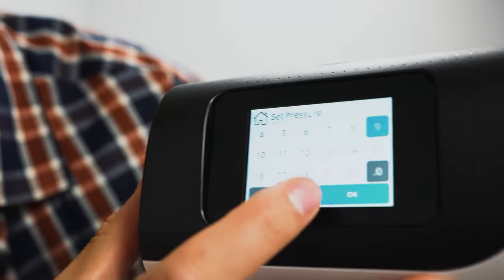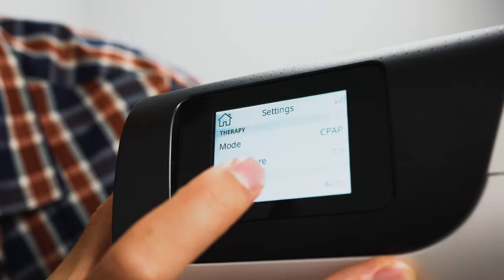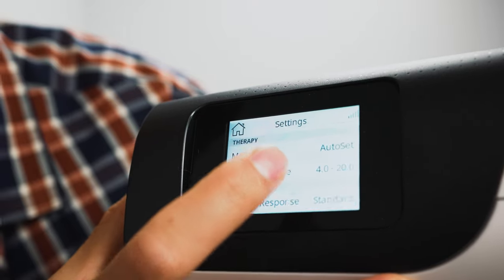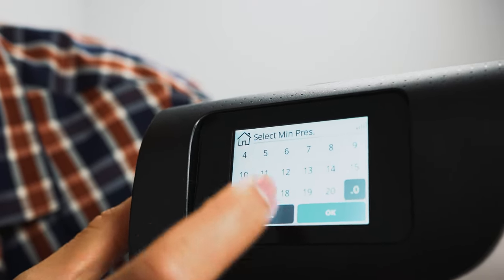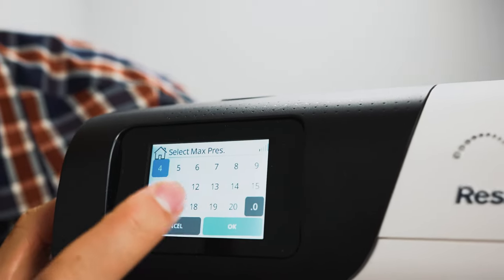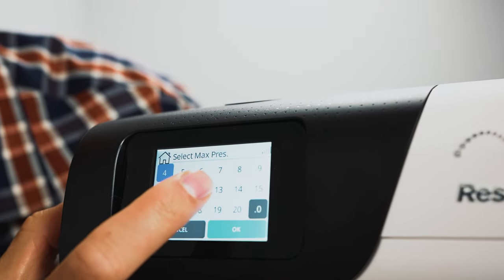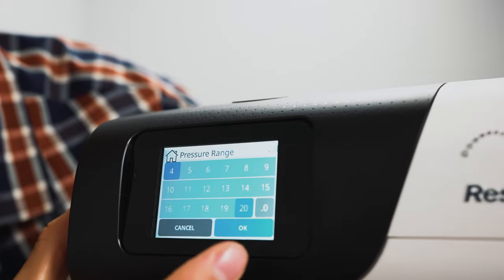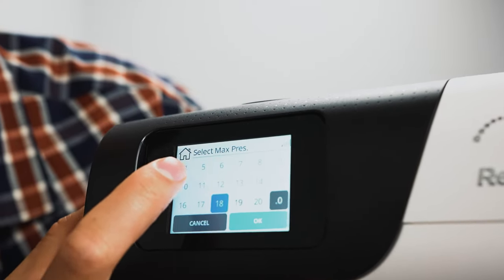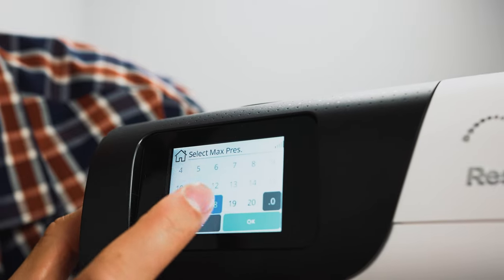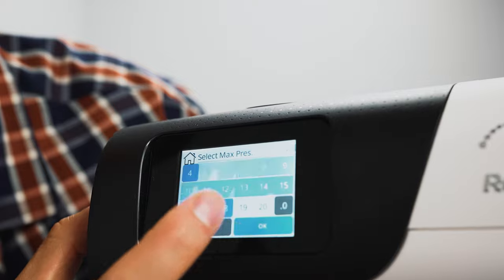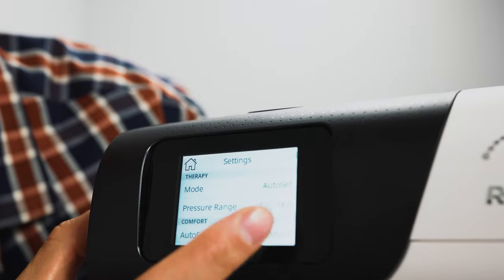So that's how you change it on this device here. And then if you have auto, let's click auto, then we got a pressure range. So select min pressure. Let's say we have a four. And then our max pressure, we have 20. So say that's what you're working with, maybe bump this down to an 18. So just like that. So now it's four to 18.